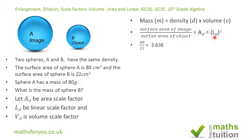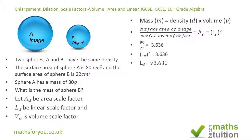The area scale factor equals the linear scale factor squared, so linear scale factor squared equals 3.636. Taking the square root of both sides, the linear scale factor equals the square root of 3.636, which gives a value of 1.907.